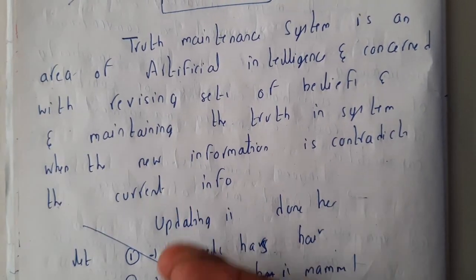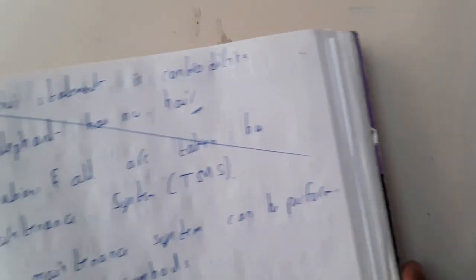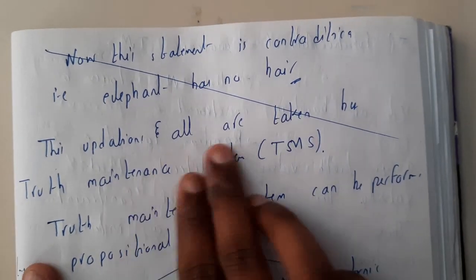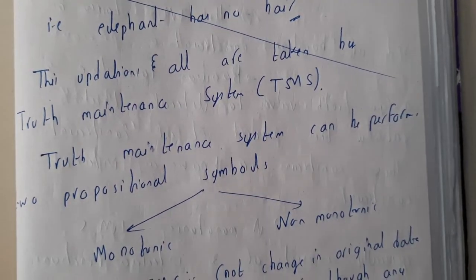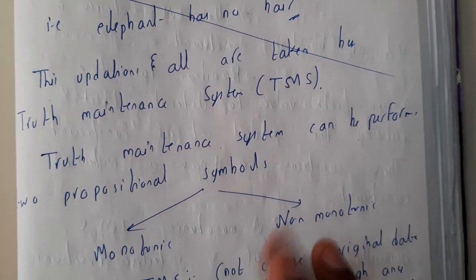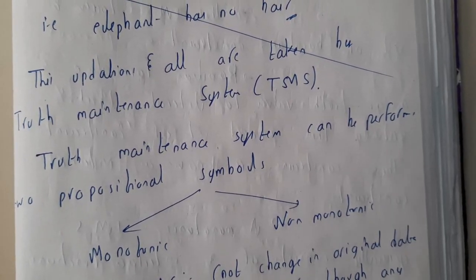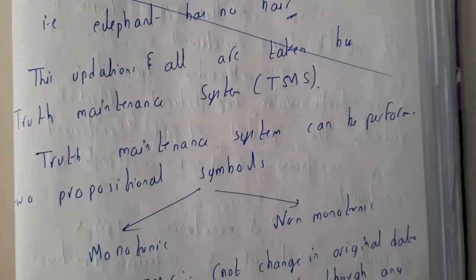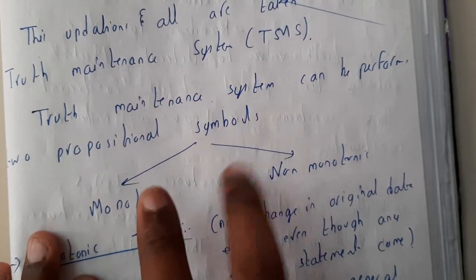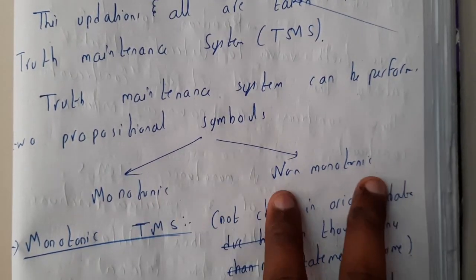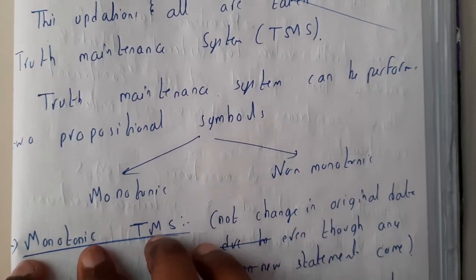So further continuing, truth management system can perform the propositional symbols in two ways: monotonic and non-monotonic. I'll be just giving you a detailed introduction about both, don't worry, in this lecture and the next lecture.